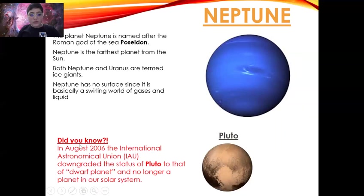Did you know, in August 2006, the International Astronomical Union, IAU, downgraded the status of Pluto to that of a dwarf planet and no longer a planet in our solar system.